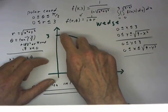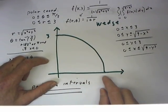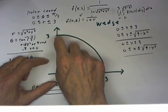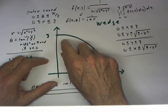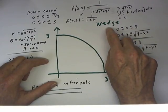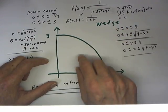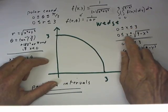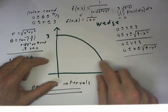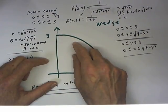As we've seen, we have a wedge of a circle of radius 3, a 90 degree wedge extending from the x-axis to the y-axis in the first quadrant. That wedge can be described in terms of cross sections parallel to the y-axis. For every value of x between 0 and 3, y goes from 0 to the square root of 9 minus x squared.